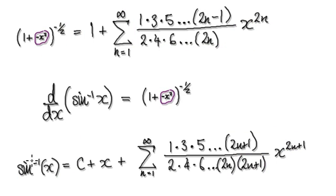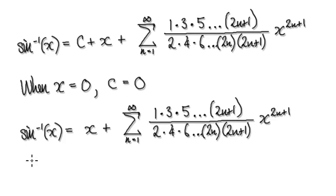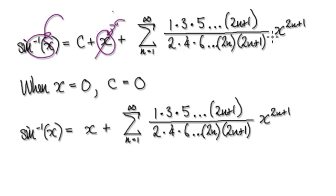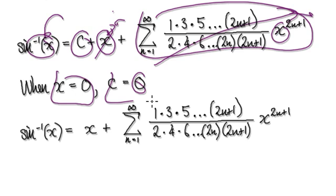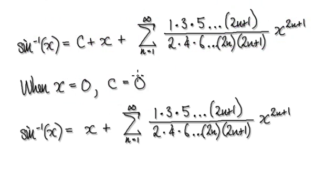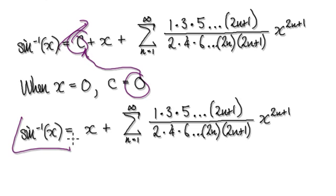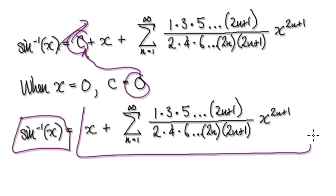Now we need to find C. When x equals 0, sin inverse of 0 would be 0, and then everything else here would be 0, and this whole thing here would also be 0. So C will be 0.